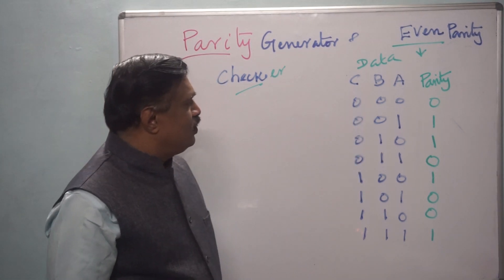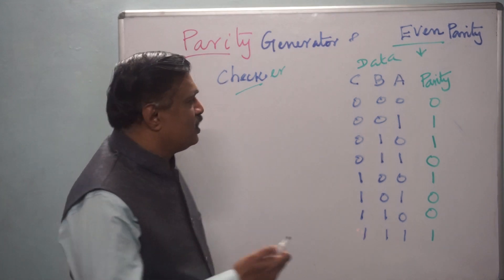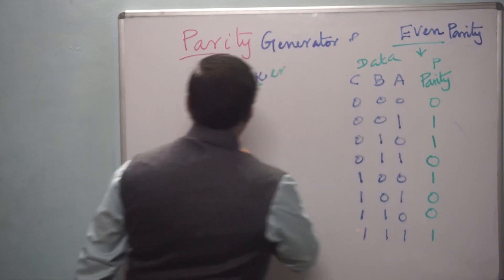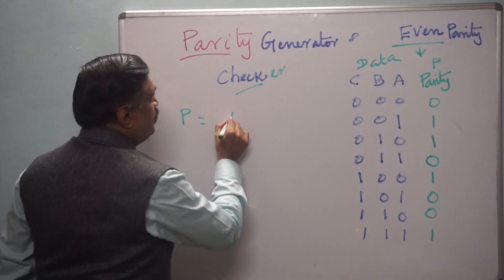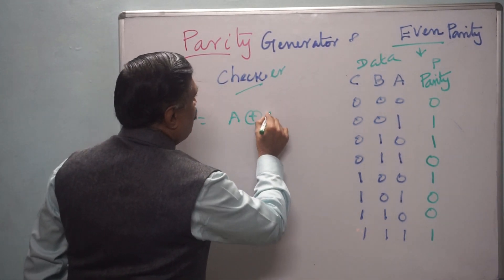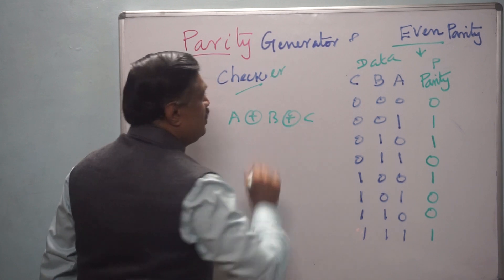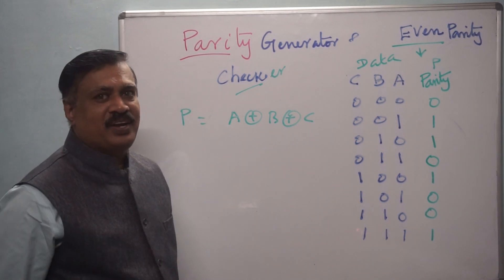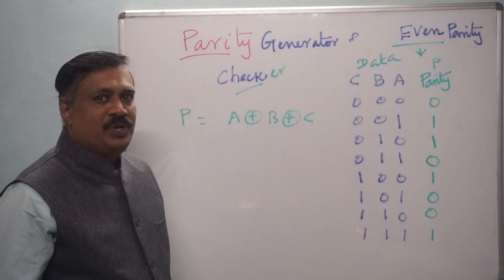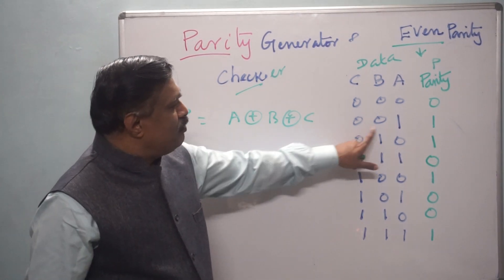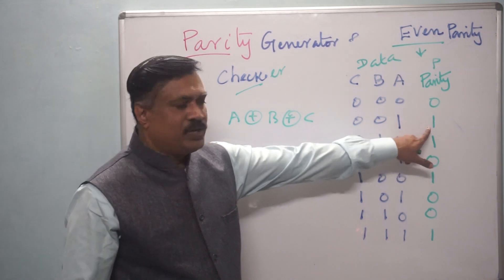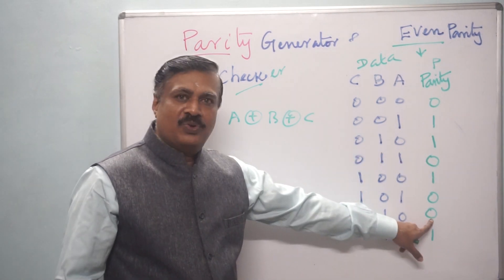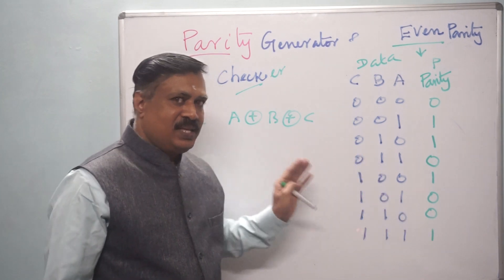By seeing the table, you can understand. Your P, that is parity, is nothing but A XOR B XOR C. That is simply an XOR gate. Because XOR gate output: if an odd number of 1s is there, it will generate 1; if an even number of 1s is there, it will generate 0. That is the XOR gate output.